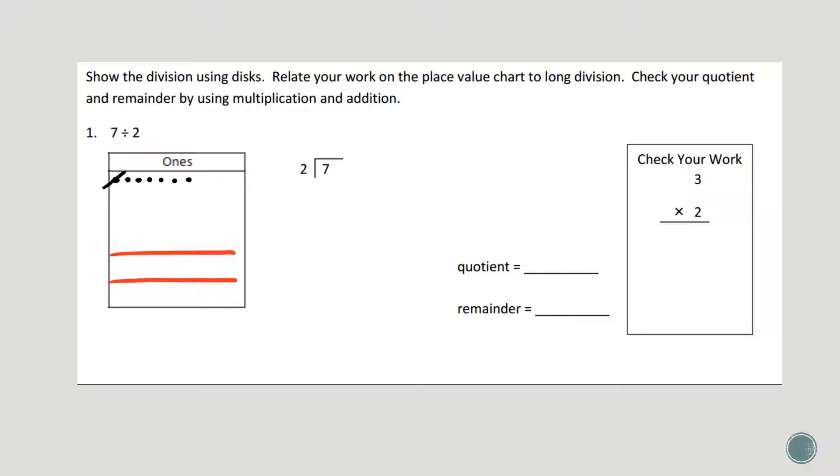So I'm going to start with my first disk, move that into the first group. Second disk will go into the second group. Now I'm going to go back to the first group, second group, go back to the first group, second group.